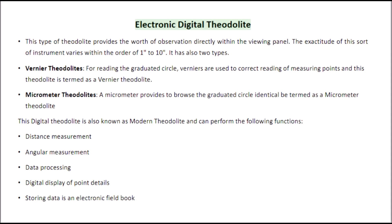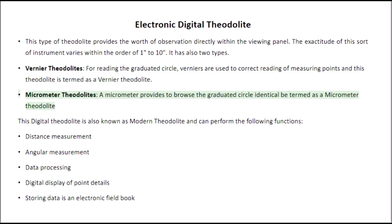Electronic Digital Theodolite: This type of theodolite provides the value of observation directly within the viewing panel. The accuracy of this sort of instrument varies within the order of 1 to 10 seconds, and it also has two types: Vernier Theodolites — a vernier is used for correct reading of the graduated circle; and Micrometer Theodolites — a micrometer is used to read the graduated circle. This digital theodolite is also known as the modern theodolite and can perform the following functions: distance measurement, angular measurement, data processing, digital display of point details, and storing data in an electronic field book.